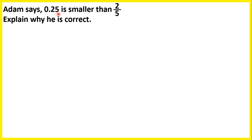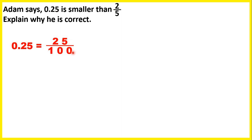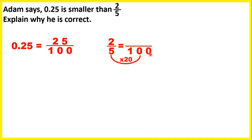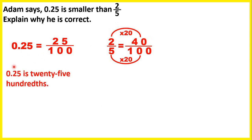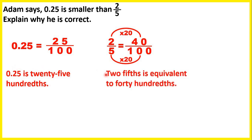Adam says 0.25 is smaller than two-fifths. Explain why he is correct. To compare a decimal and a fraction, we either change the fraction to a decimal or the decimal to a fraction. 0.25 is the same as 25 hundredths. We can find an equivalent fraction to two-fifths with a denominator of 100: 5 times 20 is 100, so 2 times 20 is 40. So 0.25 is 25 hundredths and 2-fifths is equivalent to 40 hundredths — that's how we know 2-fifths is larger and 0.25 is smaller.